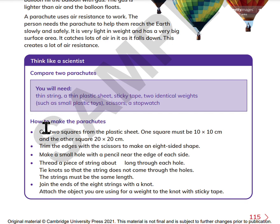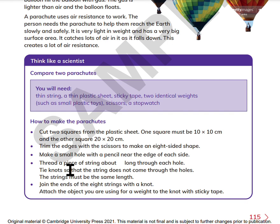How to make the parachutes: Cut two squares from the plastic sheet — one square must be 10 by 10 centimeters and the other 20 by 20 centimeters. Trim the edges with scissors to make an eight-sided shape. Make a small hole with a pencil near the edge of each side. Thread a piece of string through each hole and tie a knot so the string does not come through. The strings must all be the same length. Join the ends of the eight strings with a knot and attach the weight to the knot with sticky tape.